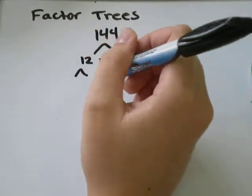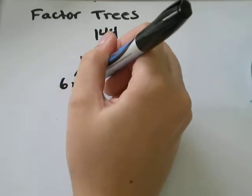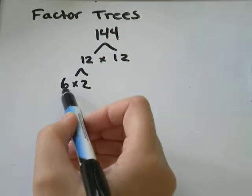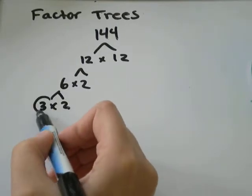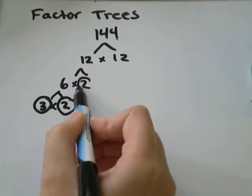12 is not a prime number. It's also 6 times 2. 6 is not a prime number. It's also 3 times 2. But 3 is a prime number, 2 is prime, and 2 is prime.